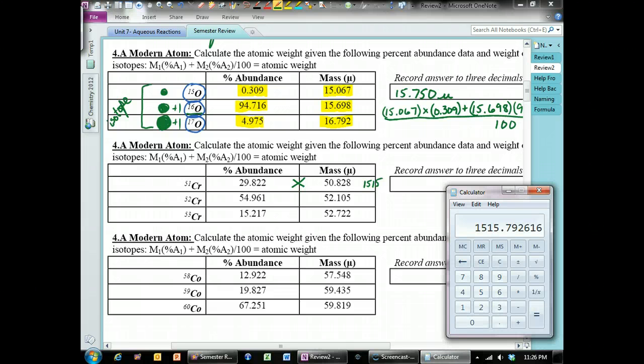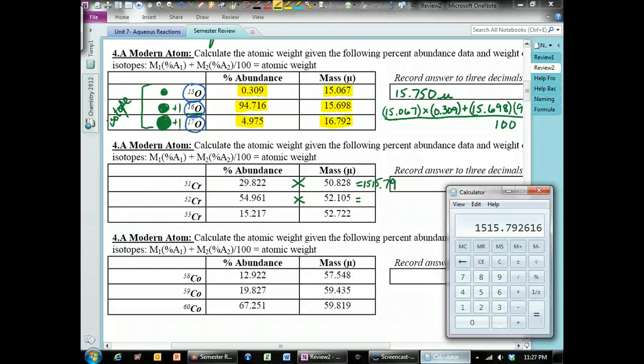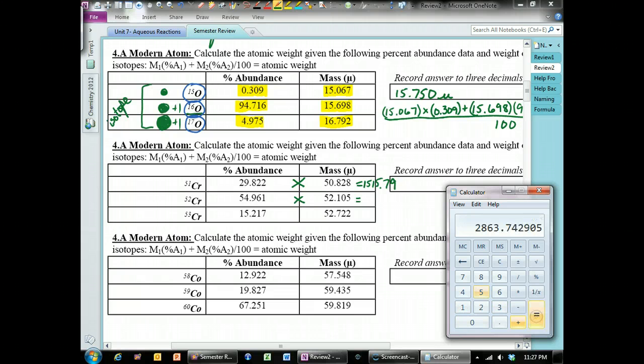So, 1515.79. Then, we're going to multiply the next two numbers by each other. And 54.961 times 52.105 equals 2,863.